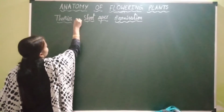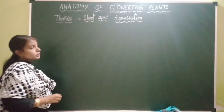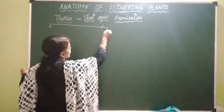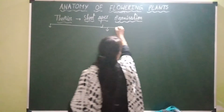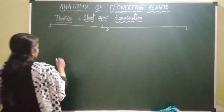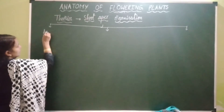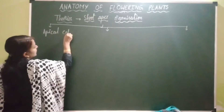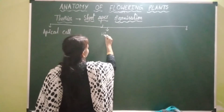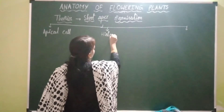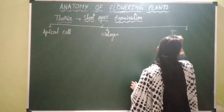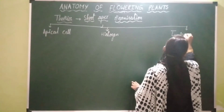Three different theories are given by different scientists to explain shoot apex organization. The first theory is the apical cell theory, the second is the histogen theory, and the third is the tunica corpus theory.